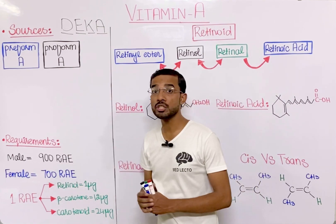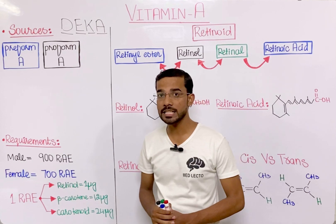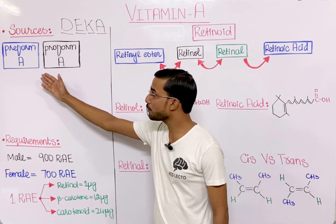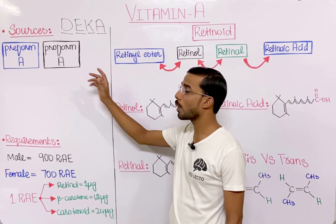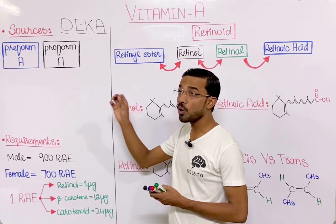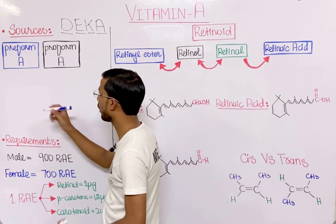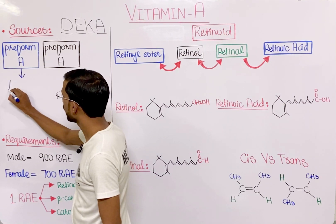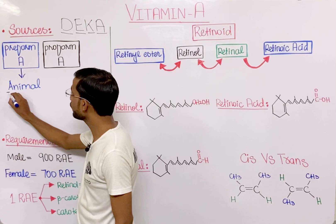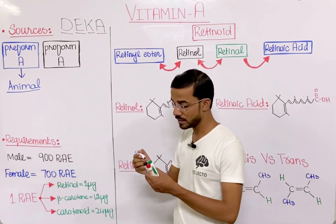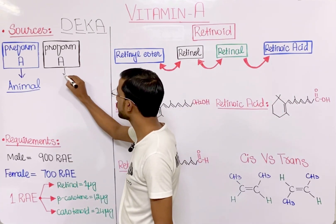If we discuss the sources of Vitamin A, it is actually present in two forms: preformed Vitamin A and proformed Vitamin A. The source of preformed Vitamin A is animals, while proformed Vitamin A actually comes from plants.